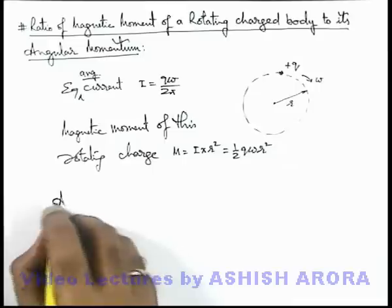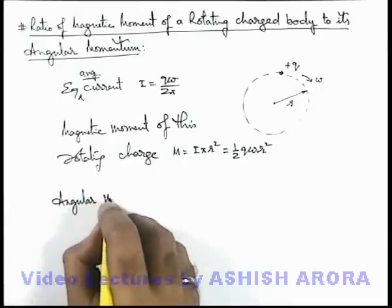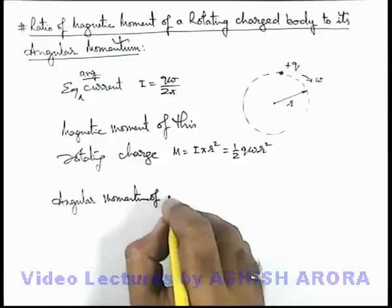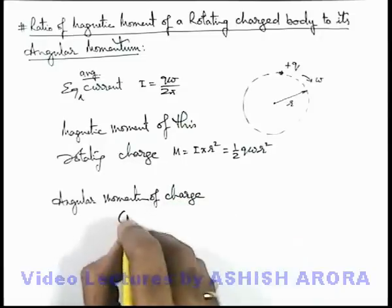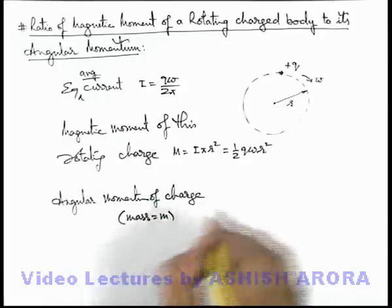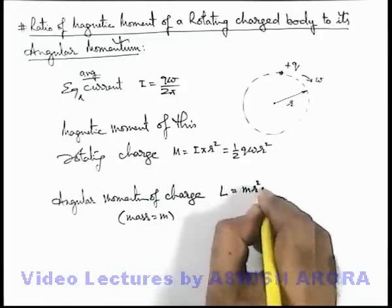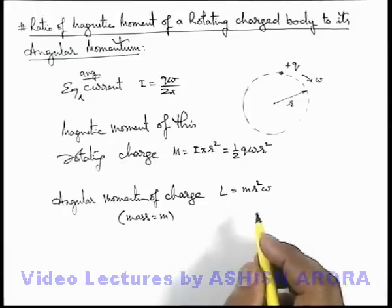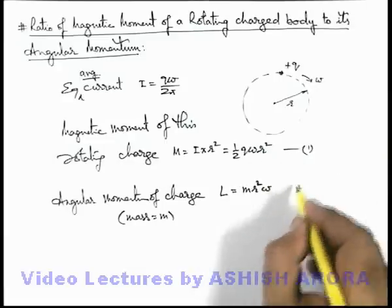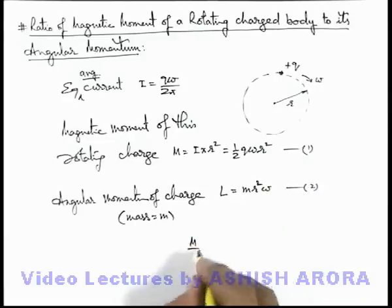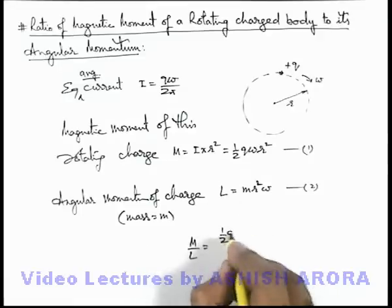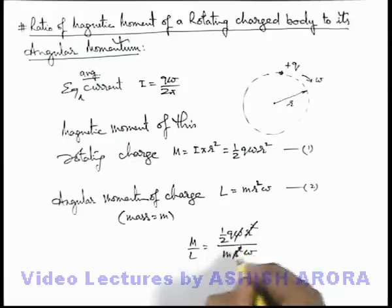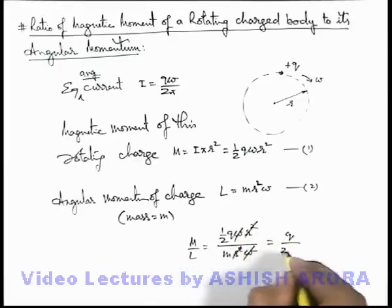Now if we calculate the angular momentum of this revolving charge, considering it has mass m, the angular momentum L can be written as mr²ω, which we already studied in the section on rotation of rigid bodies. If we find the ratio of magnetic moment to angular momentum, M/L = (½qωr²) / (mr²ω). Here ωr² cancels out, and the result we get is q/2m.